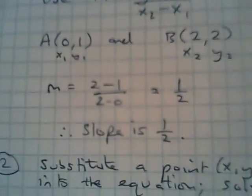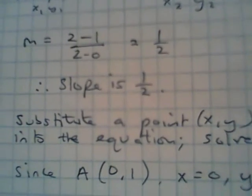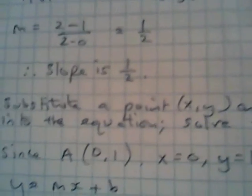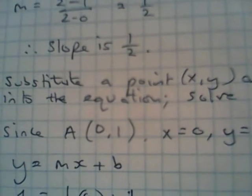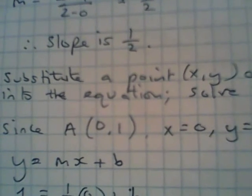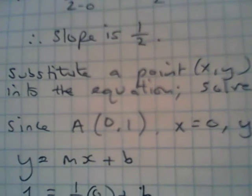Now, the second point is to take one of the points—any point will do actually, any point on the line will do—and you substitute it into a general equation.